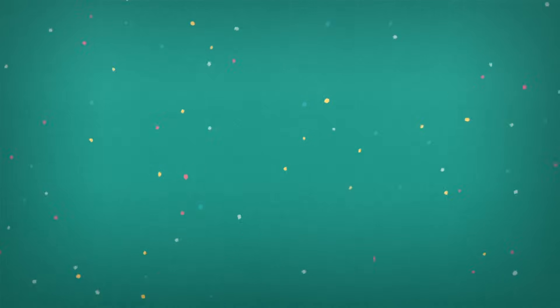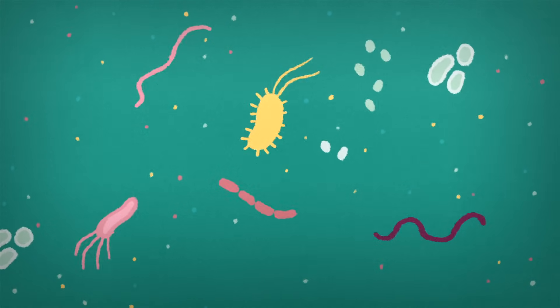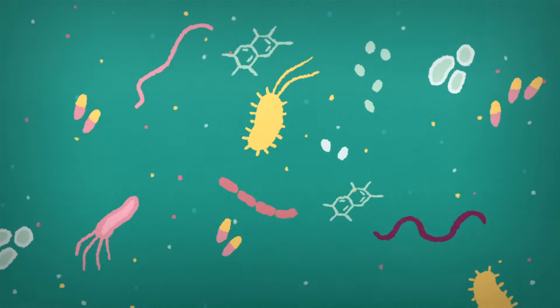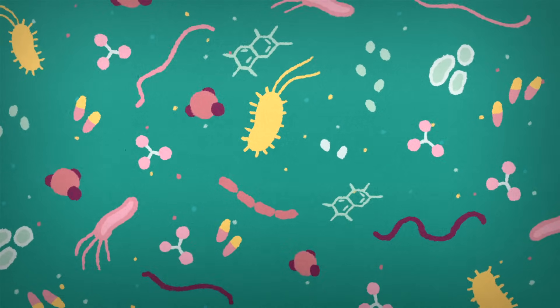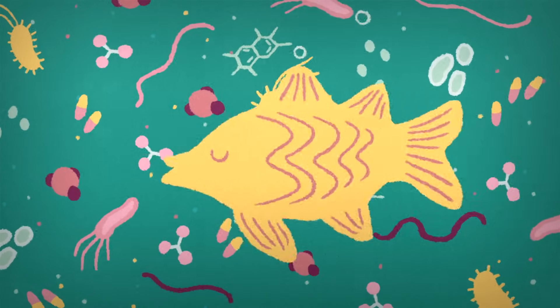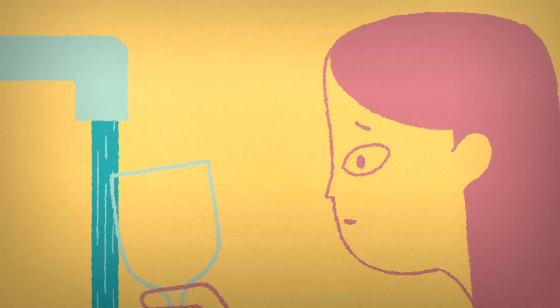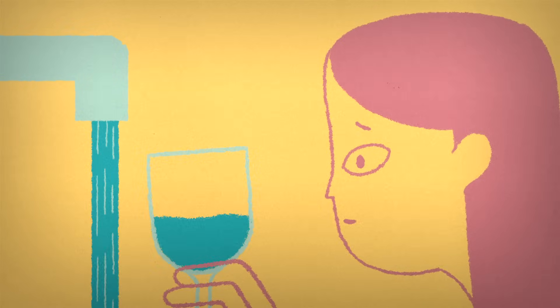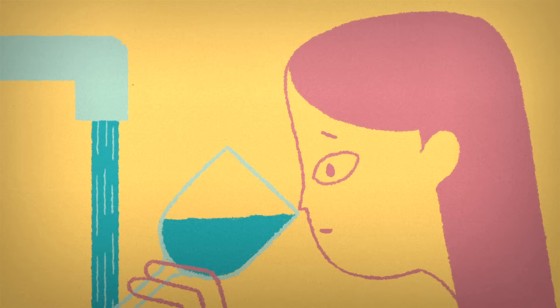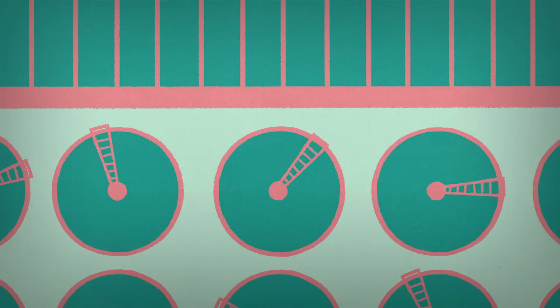But sewage is still rife with dangerous contaminants, including billions of pathogens and microorganisms, trace chemicals, and excess inorganic nutrients that can pollute rivers and lakes. So even if we aren't planning to drink this concoction, we still need to clean it, which is why sewer systems typically run to wastewater treatment plants.